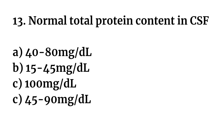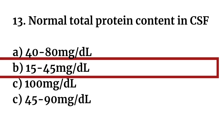Question number thirteen: Normal total protein content in cerebrospinal fluid — Option A: 40–80 mg/dL. Option B: 50–45 mg/dL. Option C: 100 mg/dL. Option D: 45–90 mg/dL. The right answer is Option B. Normal total protein content in CSF is 15–45 mg/dL.